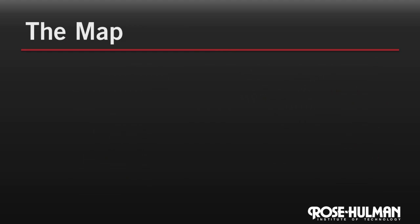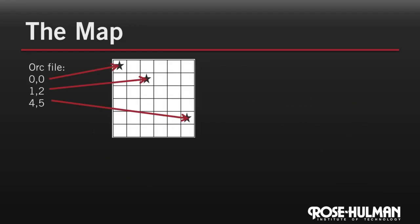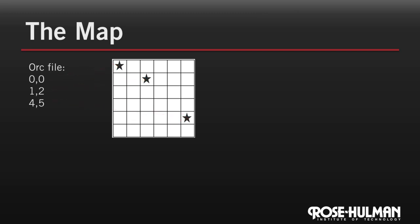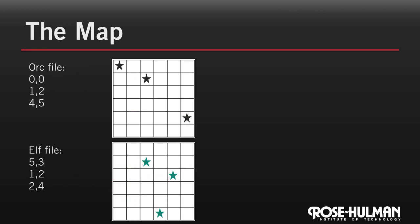Imagine that we have a map divided into squares. We're given two files. One file indicates which squares of the map are occupied by an orc. The other file does the same for elves. If a square has both an orc and an elf, a battle will be fought there. Our job is to display a text map indicating where the battles occurred.